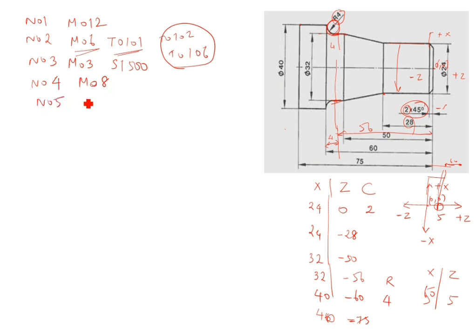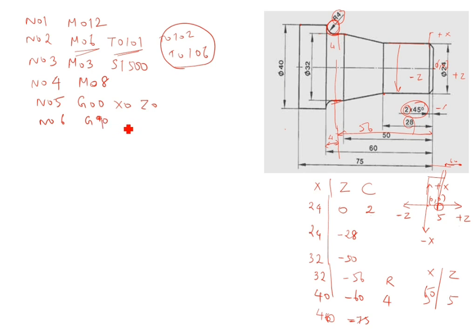N05 starts the program with G00 X0 Z0 — this is rapid linear positioning. X0 Z0 means the tool is not moving to any other place; you start with X0 Z0. N06: G90, which is absolute program mode. G01 X0 Z0 F0.5 — F is the feed rate. Feed rate can be 0.1, 0.5, 2, or whatever you choose.